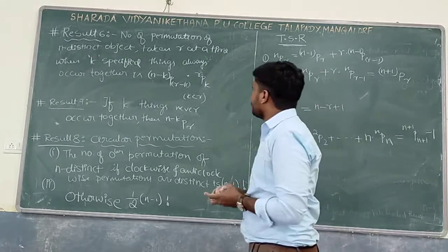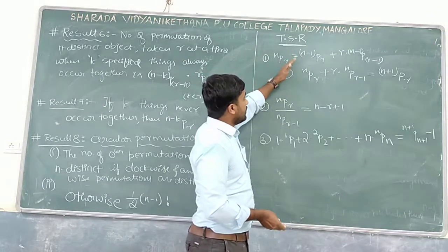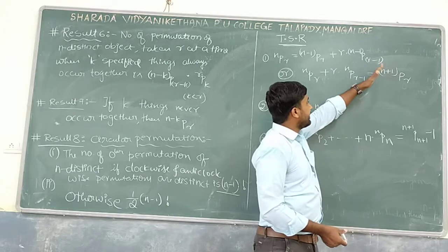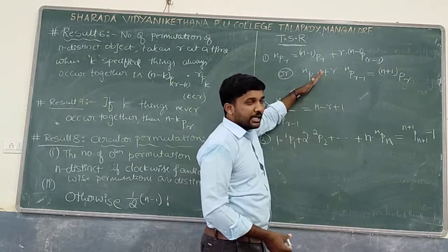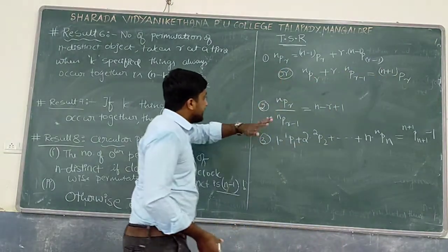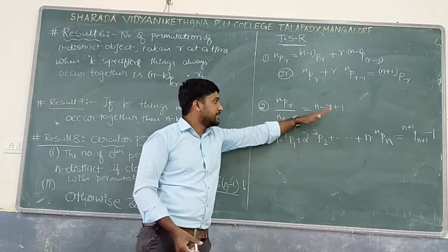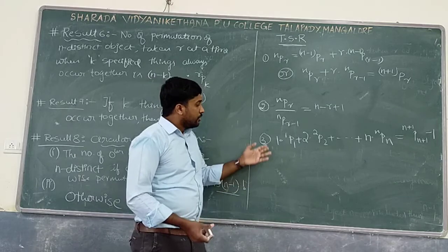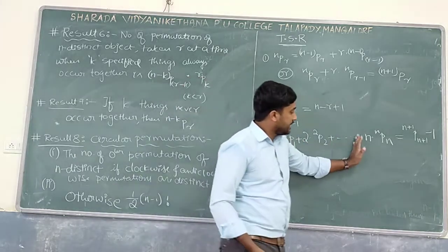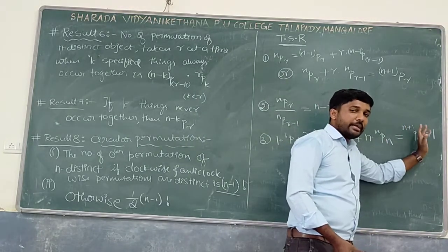Time-saving results for permutation. First: nPr = (n−1)Pr + r × (n−1)P(r−1), or equivalently, nPr + r × nP(r−1) = (n+1)Pr. Second: nPr / nP(r−1) = n − r + 1. Third: 1×1Pr + 2×2Pr + ... + n×nPn = (n+1)P(n+1) − 1.